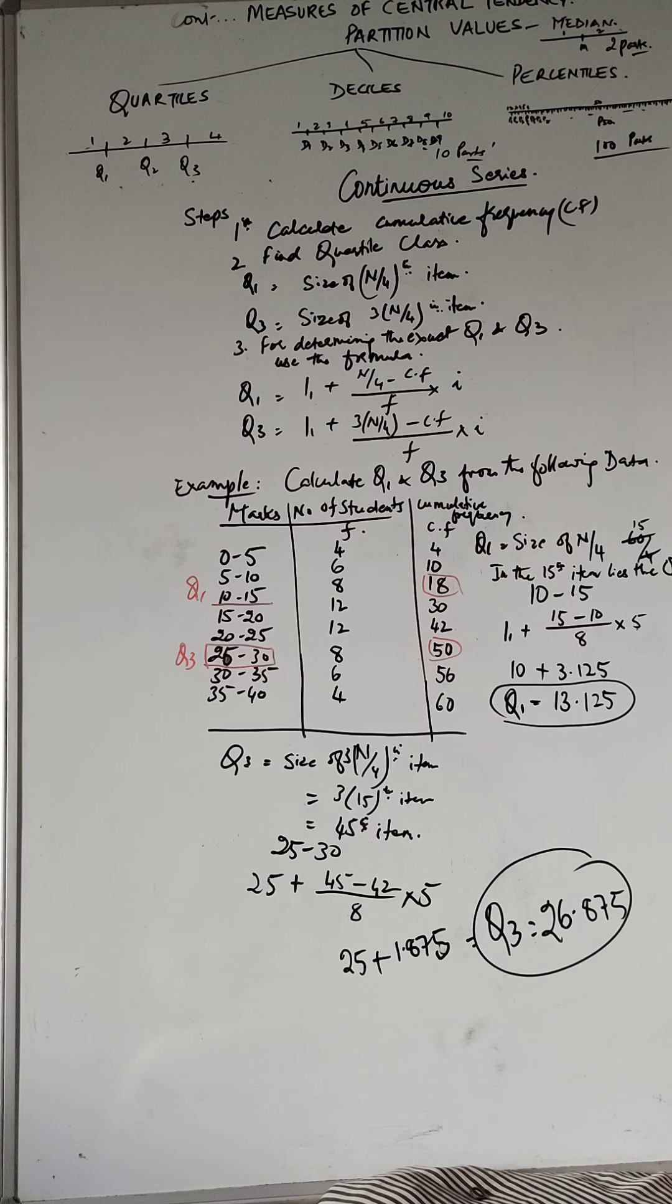Welcome to my class in continuation with unit 3 measures of central tendency, that is mean, median and mode. We finished with all of them and now we are doing partition values. We've done median, which is a partition value that divides a statistical series into two equal parts. Likewise, there are other partition values which divide a series into 4 parts, 10 parts and 100 equal parts. Partition values dividing a series into 4 equal parts are known as quartiles, those dividing into 10 equal parts are known as deciles, and those dividing into 100 equal parts are known as percentiles.